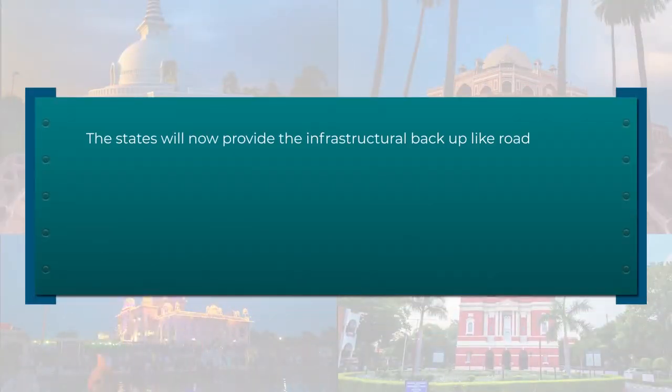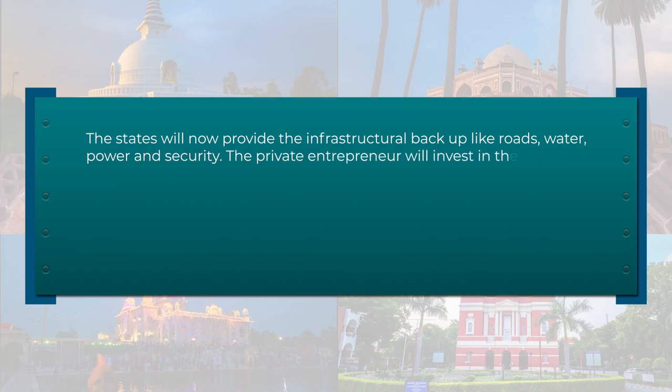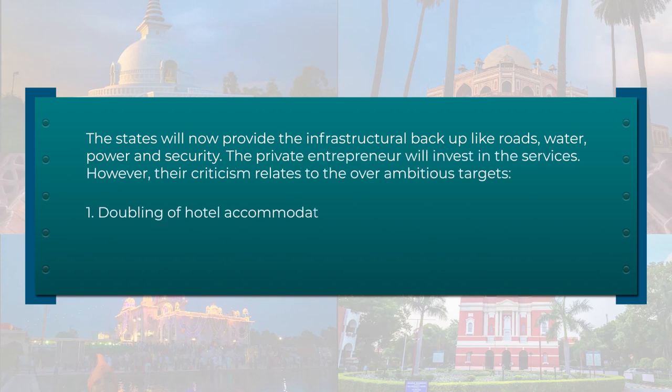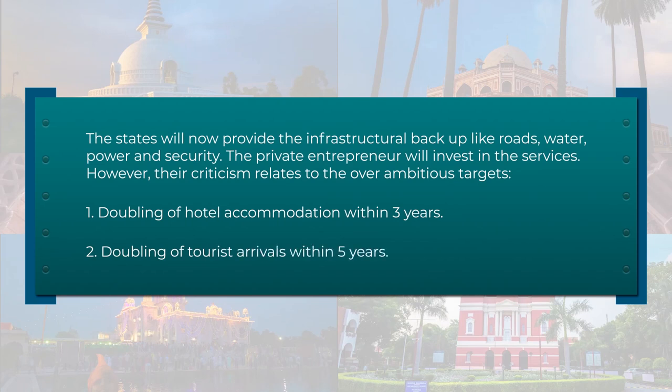The travel trade has also approved the broader outlines of the National Action Plan — the Tourism Policy of 2002 — though we are yet to have a full-fledged policy since then. The states will now provide the infrastructure backup like roads, water, power, and security, while the private entrepreneur will invest in the services. The criticism relates to over-ambitious targets, like doubling hotel accommodation in three years. Still, we have come a long way — from 2.3 million tourists in the year 2000 to almost 14.5 million international tourist visits in 2018 — though we should have more realistic targets.